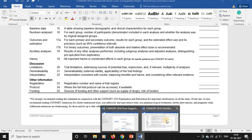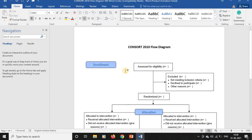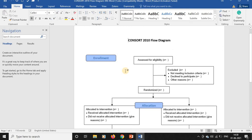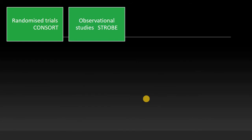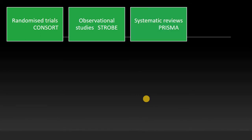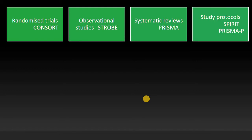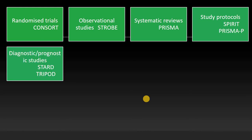Similarly, the CONSORT flow diagram is used for representing the methodology section of a randomized controlled trial. We have STROBE guidelines for observational studies, separately for case-control, cohort, and cross-sectional studies. When doing systematic reviews, PRISMA reporting guidelines are used. When preparing study protocols, SPIRIT and PRISMA-P are used — note that PRISMA-P stands for protocol, while the other PRISMA is for systematic reviews.